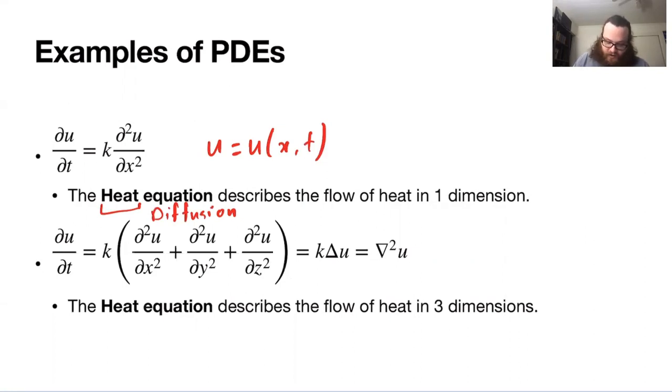The heat equation is set up with a function u, which is a function of both x and t. Generally, we think of x as a spatial variable and then t as a time variable. But what the heat equation is describing is how heat flows or heat diffuses in one dimension.